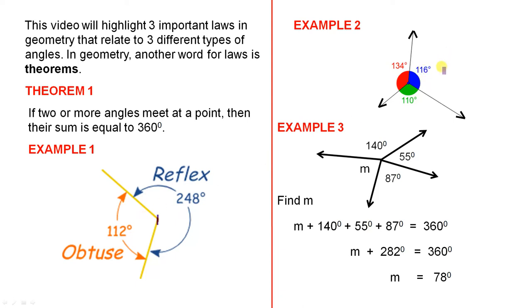Here is a specific example involving three angles, and here they are. If you add those three angles together, they add up to 360 degrees, and that's what the theorem says.